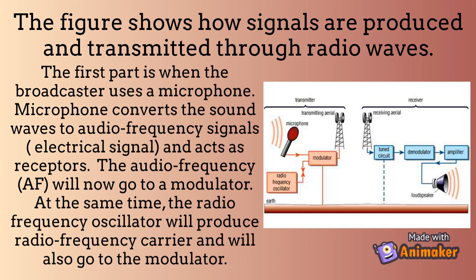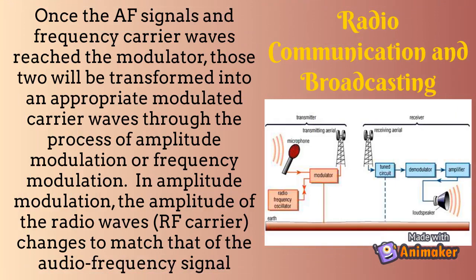The figure shows how signals are produced and transmitted through radio waves. The first part is when the broadcaster uses a microphone. The microphone converts the sound waves to audio frequency signals — an electrical signal — and acts as a receptor. The audio frequency signals then go to a modulator. At the same time, the radio frequency oscillator produces a radio frequency carrier, which also goes to the modulator. Once the AF signals and frequency carrier waves reach the modulator, the two are transformed into modulated carrier waves.